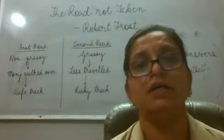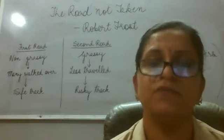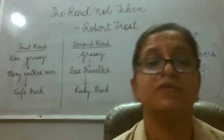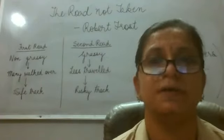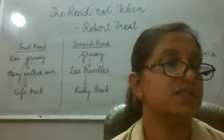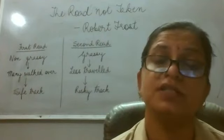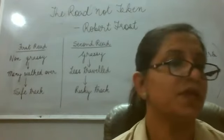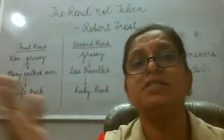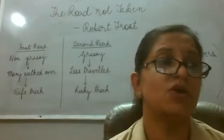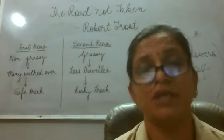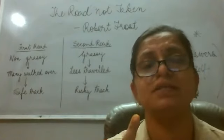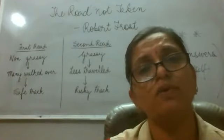When he says yellow wood, it has visual imagery. Along with that, it also has symbolism because yellow wood refers to a forest in the autumn season. And when he says two roads, this is again symbolism because that refers to choices in our life. And sorry, I could not travel both — he is talking about himself, that being one single person, it is not possible to walk over both roads.